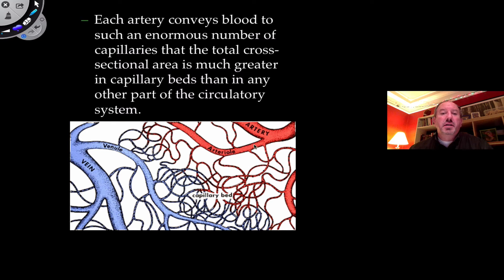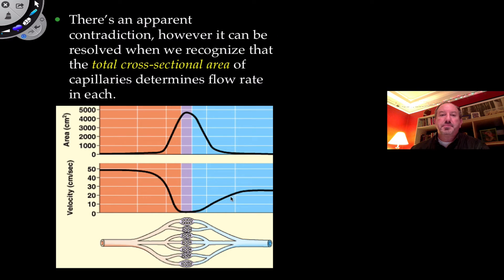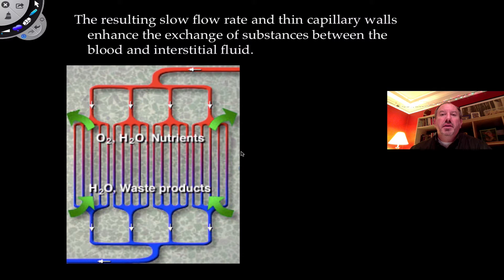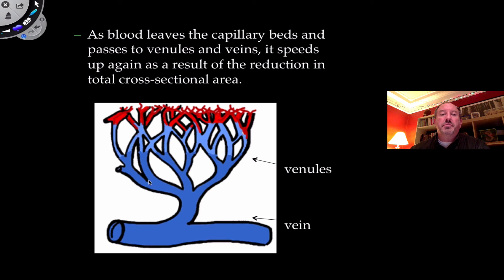So when blood is flowing quickly through an arteriole, it slows down in the capillary and then increases again in the venule. That's very conducive to exchange — when the blood is slowly moving cell by cell through the capillaries, oxygen, carbon dioxide, nutrients, and hormones are exchanged. When blood leaves the capillary bed and travels into a venule and then a vein heading back toward the heart, its velocity increases because there's a reduction in surface area of those vessels compared to the capillary bed.